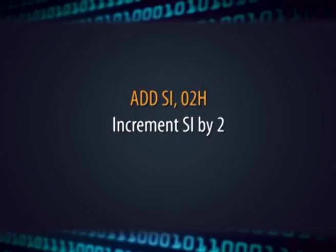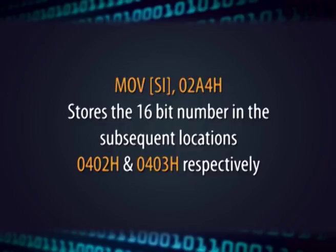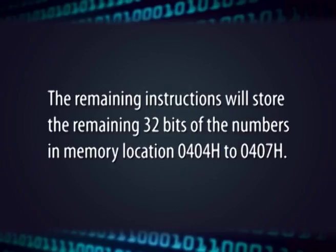Then we increment SI by 2 using the instruction ADD SI, 02. The instruction MOV [SI], 02A4H stores the 16-bit number in the subsequent locations 0402H and 0403H respectively. The remaining instructions are self-explanatory in that they will store the remaining 32-bit numbers in the memory locations 404H to 407H. The next 8 instructions transfer the second 64-bit number to the memory offset defined by register DI, from location 500H to 507H.